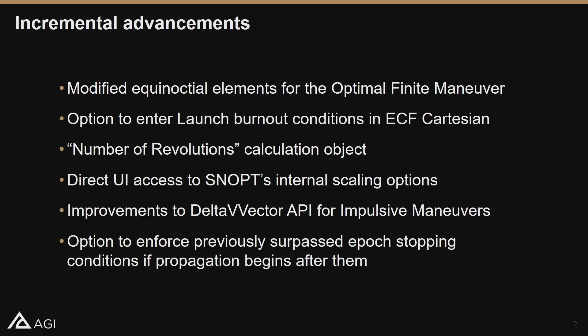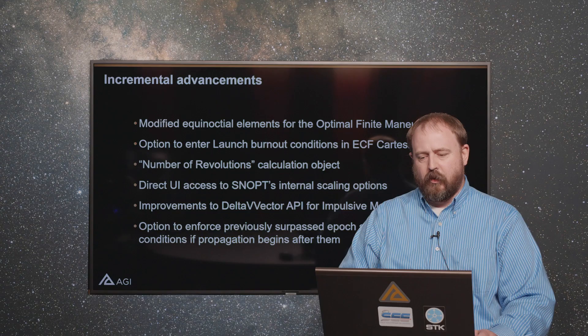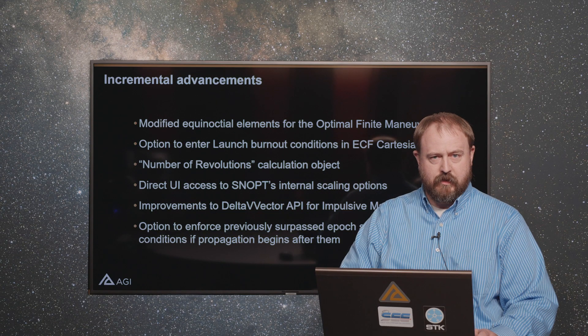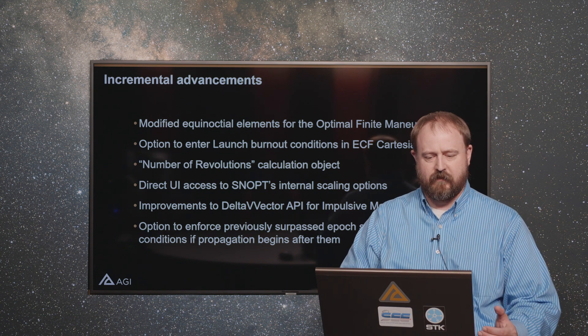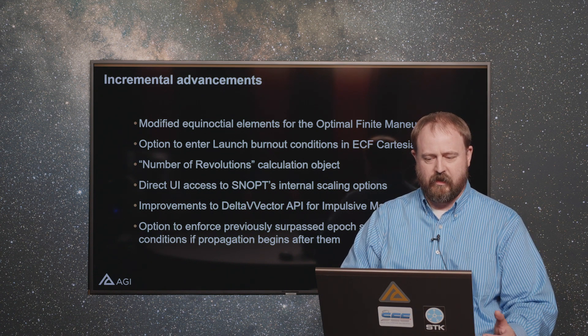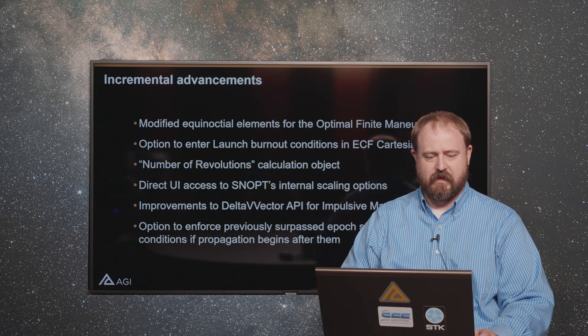For example, we've added modified equinoctial elements as an option for the optimal finite maneuver, which lets folks pose problems a little bit differently. We've also added earth-centered fixed Cartesian coordinates so you can specify your launch burnout conditions in those coordinates.